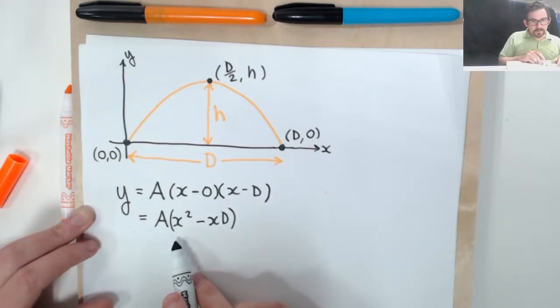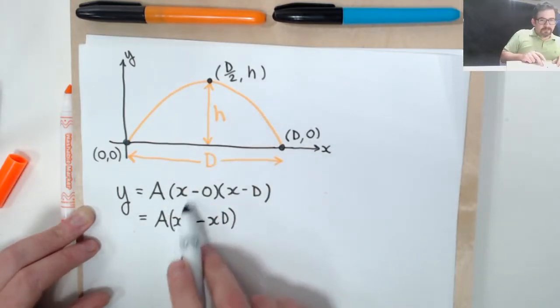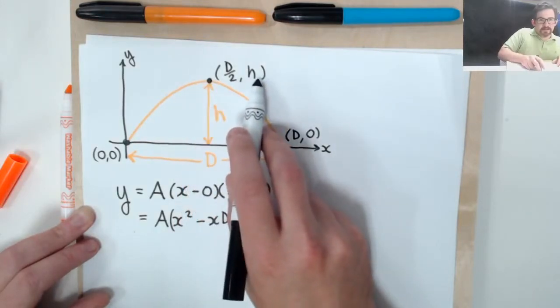So what do we know now? Well, we know that at a certain point here, the height, we haven't used this yet, is going to be h.